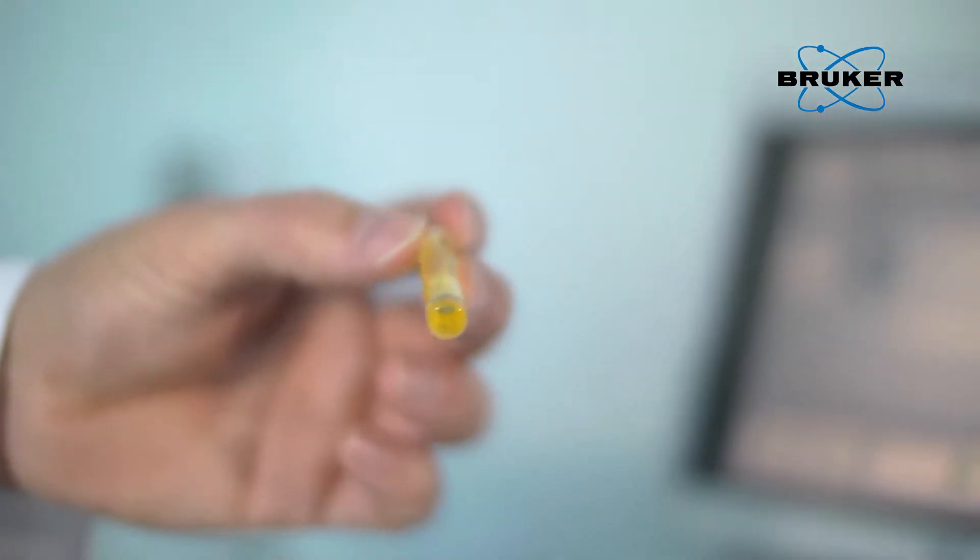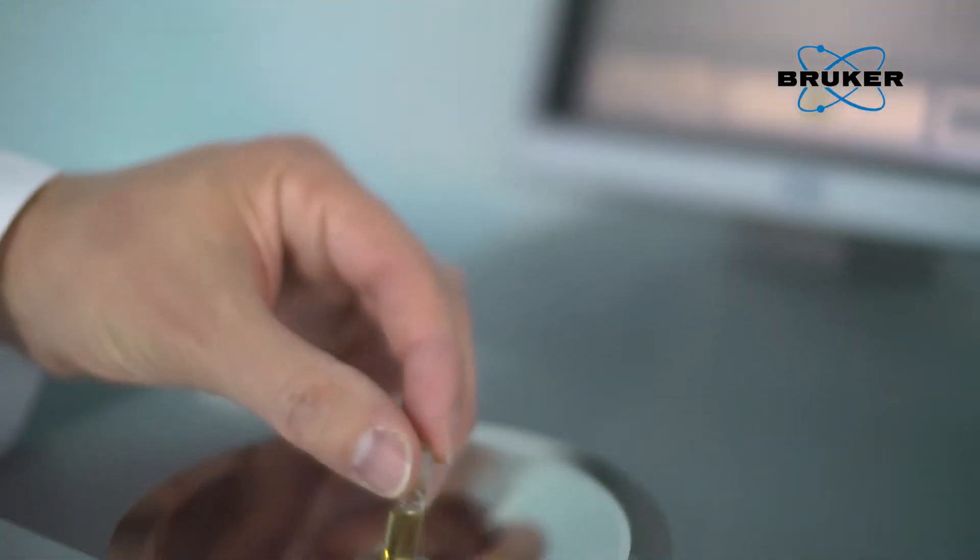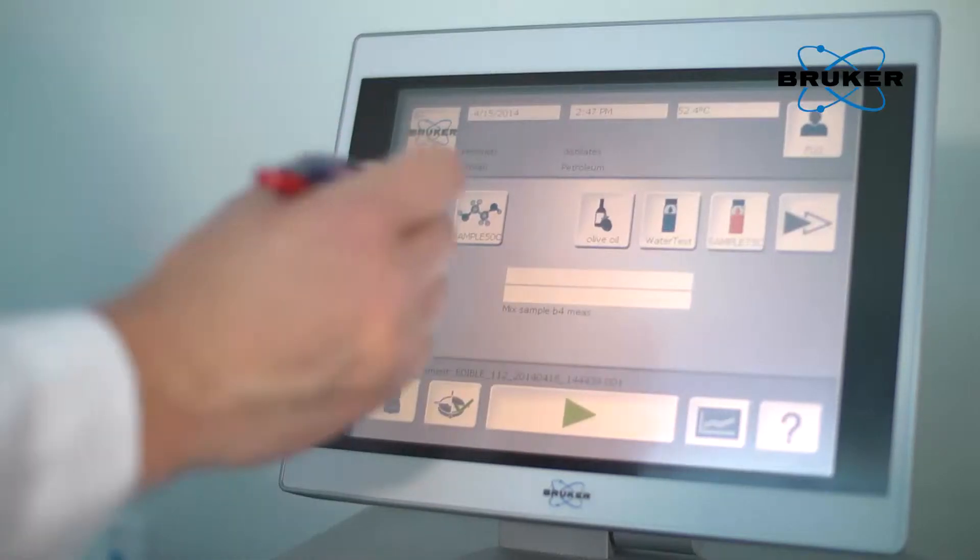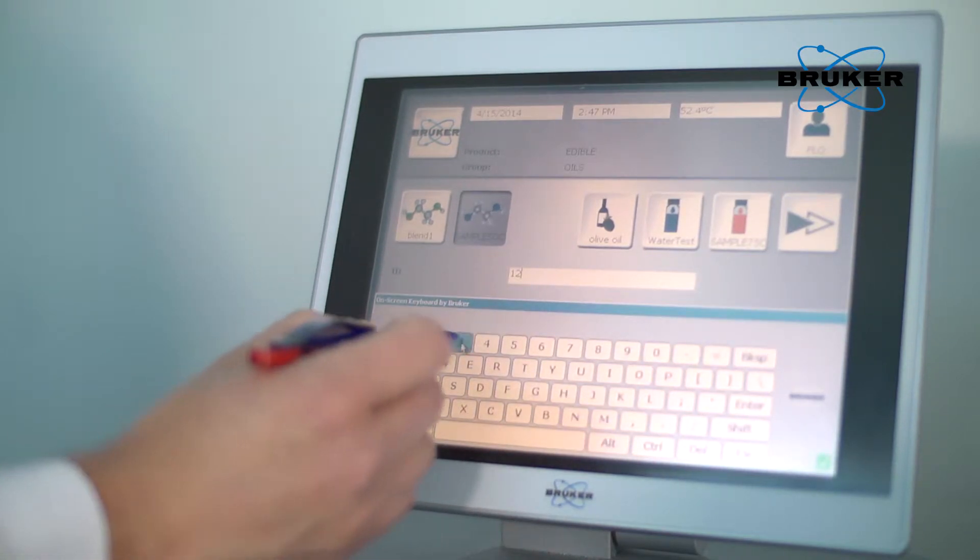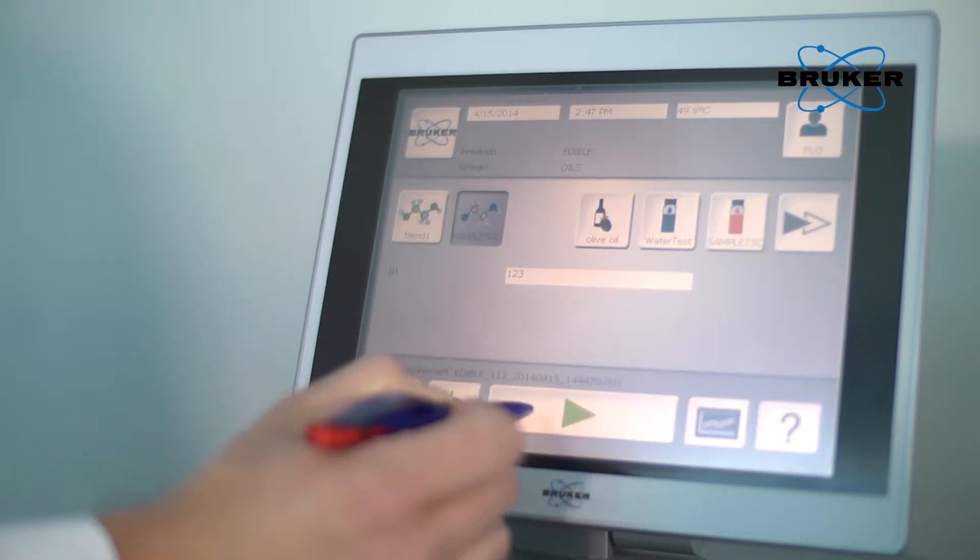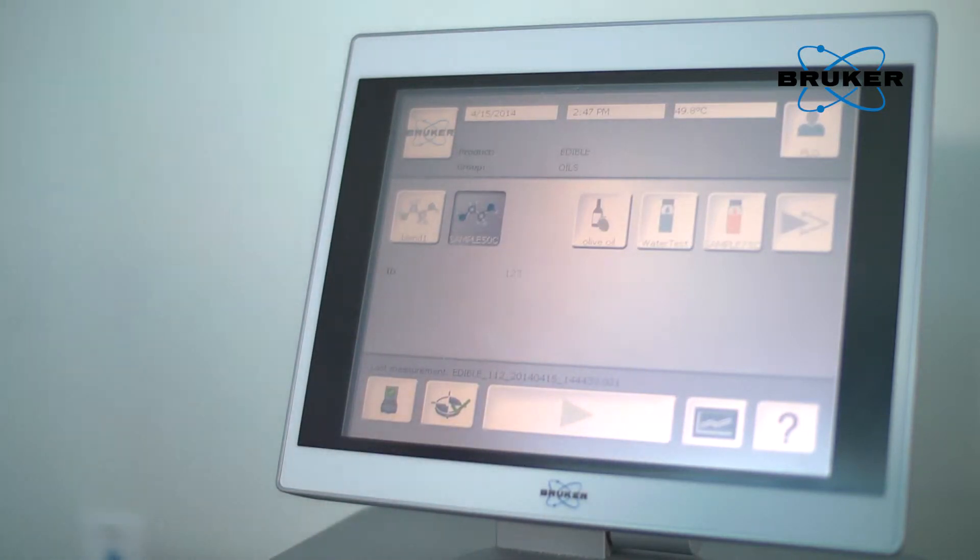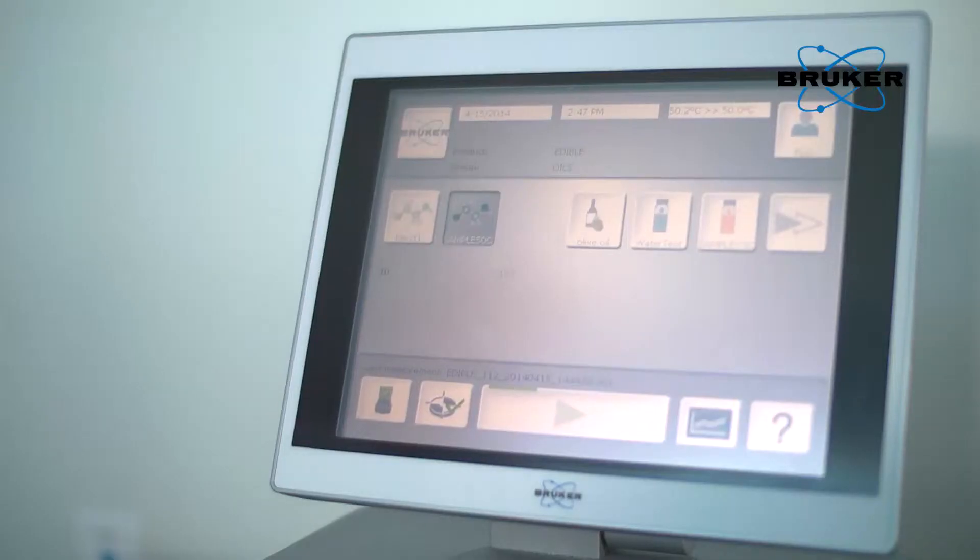The sample is simply filled into the measurement cup or sample vial and placed onto the spectrometer. The product is selected by either pressing on the respective product icon or by using a barcode reader. A simple touch on the screen starts the measurement. The progress is displayed through the green status bar.